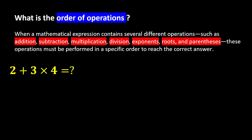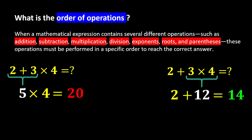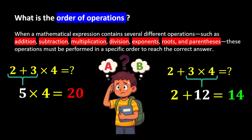For better understanding, look at this example: 2 plus 3 times 4. If we first add 2 and 3, we get 5, and then multiply 5 by 4, we get 20. But if we first multiply 3 by 4, we get 12, and then 2 plus 12 becomes 14. But which answer is correct — 20 or 14?